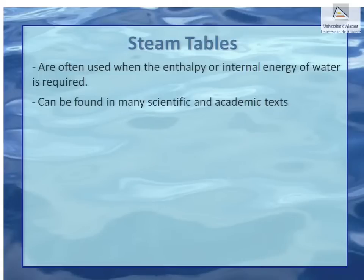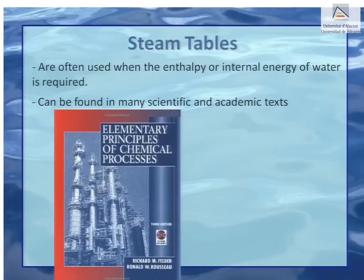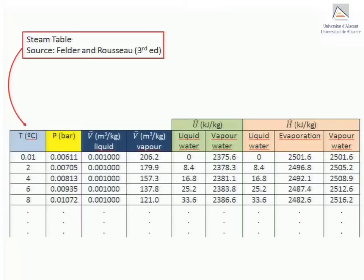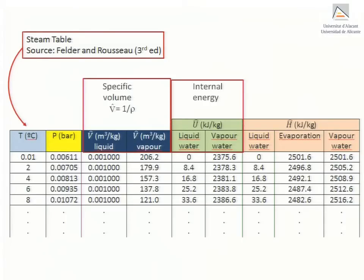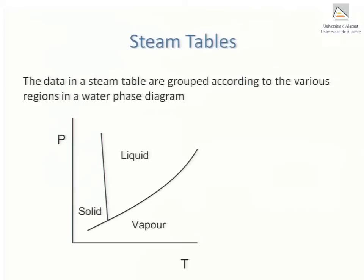First year chemical engineering students from universities the world over often refer to the steam tables found in the back of the book by Felder and Rousseau, or in the tables published by Rogers and Mayhew. Steam tables usually contain data on the specific volume — the inverse of density — of liquid water and its vapour, the specific internal energy, as well as the specific enthalpy, both at various temperatures and pressures. The data in a steam table are grouped according to the various regions in a water phase diagram, which represent the different physical states of water.